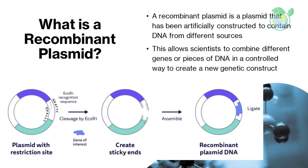What is a recombinant plasmid? A recombinant plasmid is a plasmid that has been artificially constructed to contain DNA from different sources. This allows scientists to combine different genes or pieces of DNA in a controlled way to create a new genetic construct.